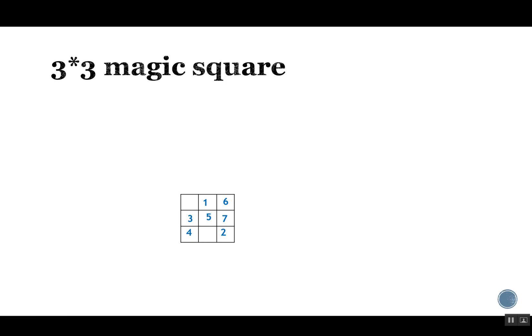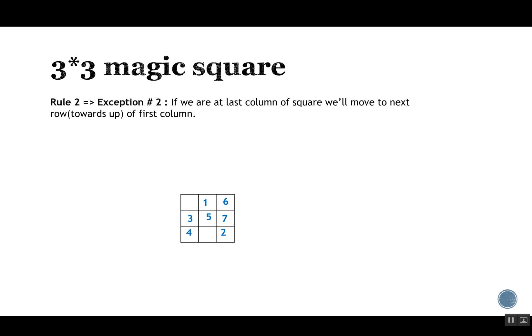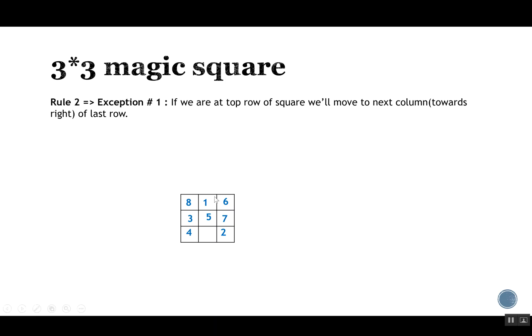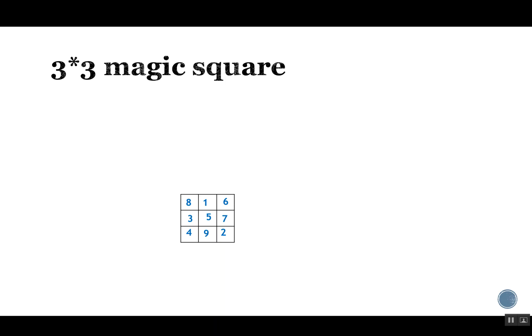For number 8, we are at the last column, so exception two applies: move to the next row towards up of the first column and place number 8 there. For number 9, only one cell remains. Following exception one — top row, move to next column right in the last row — we place number 9 there, completing the 3×3 magic square.